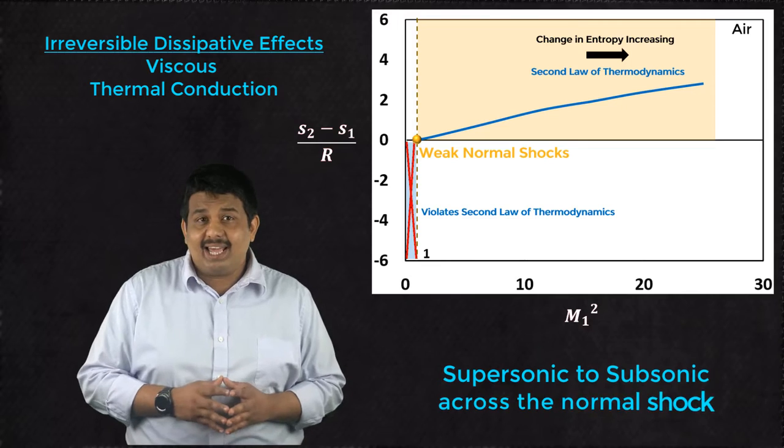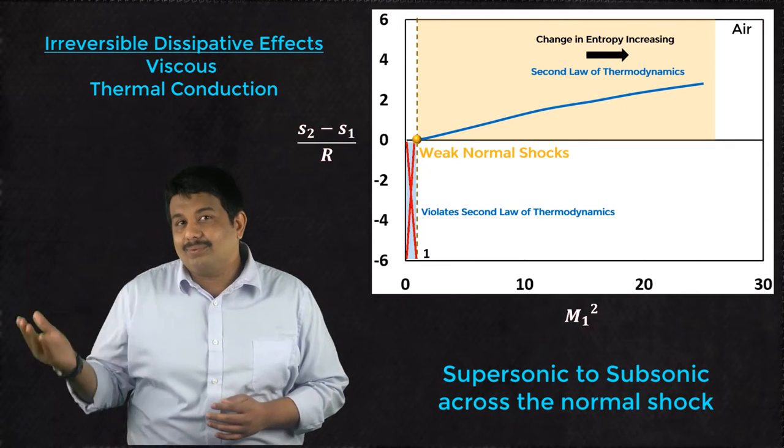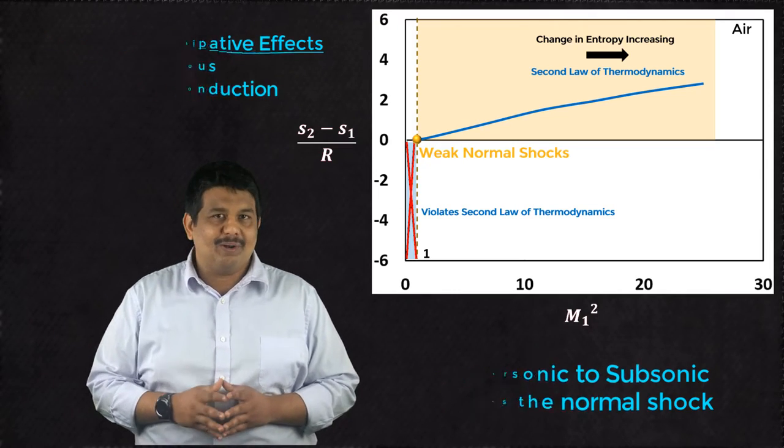This mathematical analysis reiterates that the flow must decelerate from supersonic to subsonic across a normal shock.